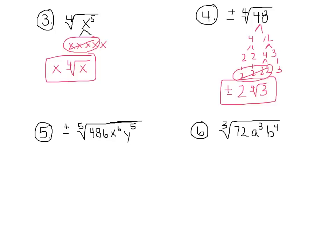Let's go on to the next one. 5th root of 486 x to the 6th y to the 5th. So let's break down the 486. So I know it'll be 2 times 243. Break down the 243. That's 3 times 81. 81 breaks down to be 9 times 9. And then 9 breaks down 3 times 3. Break it down again, 3 times 3. We're looking for a group of 5.